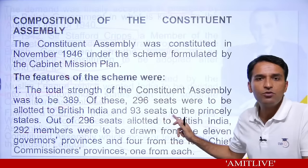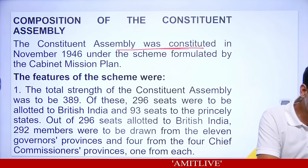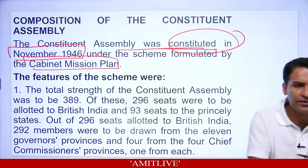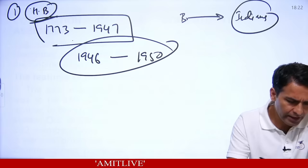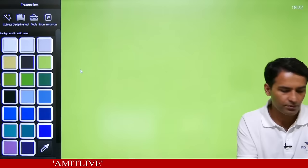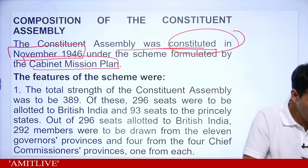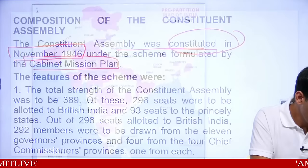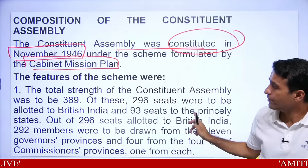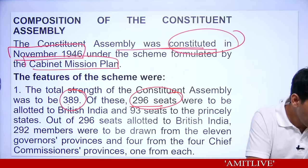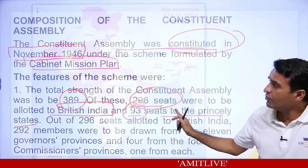The Cabinet Mission plan was constituted in November 1946 based on their scheme. The scheme said: 389 people in the Constituent Assembly — 296 from British India and 93 from princely states.